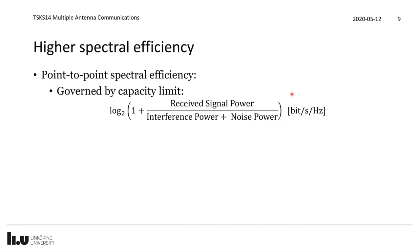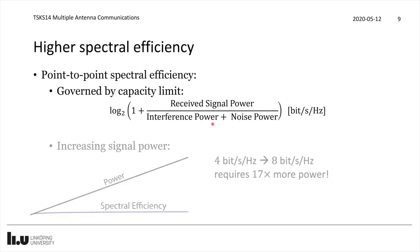When it comes to higher spectral efficiency, if you look at the point-to-point link from one antenna to one antenna, the capacity limit is described by log₂(1 + signal power / (interference power + noise power)), measured in bits per second per hertz. If we would like to increase this number, one basic thing is to increase the signal power. But because of the logarithm, the spectral efficiency is barely going to increase even if we scale power linearly.